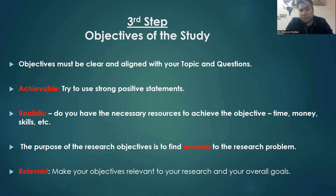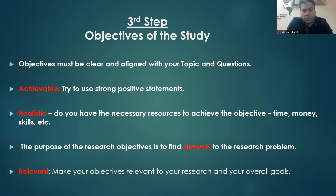Number one, the objective must be achievable. Try to use strong, positive statements. Ask yourself: do you have the necessary resources to achieve the objectives — time, money, skills, etc.? So it must be realistic. The purpose of the research objectives is to find answers to the research problem.